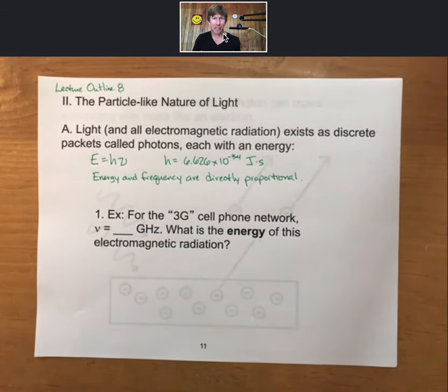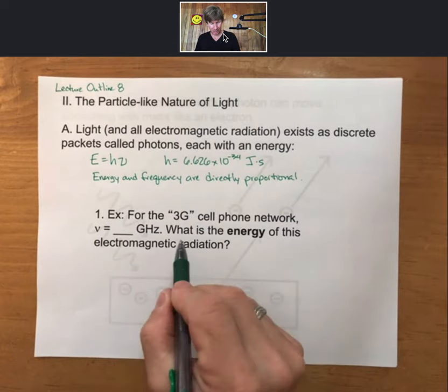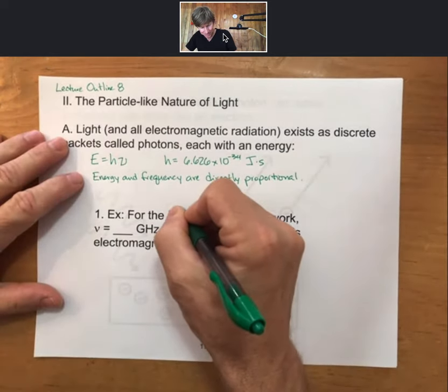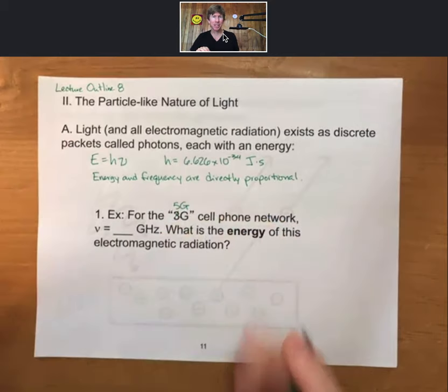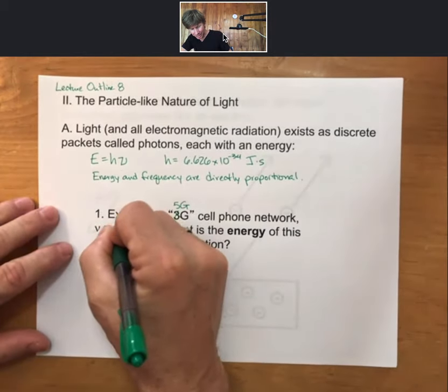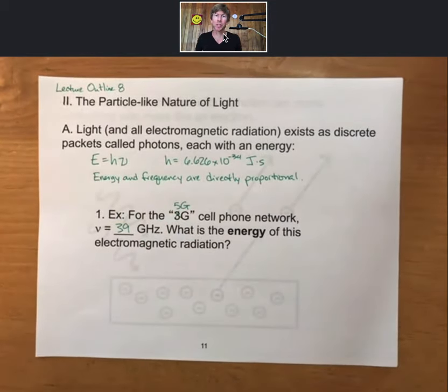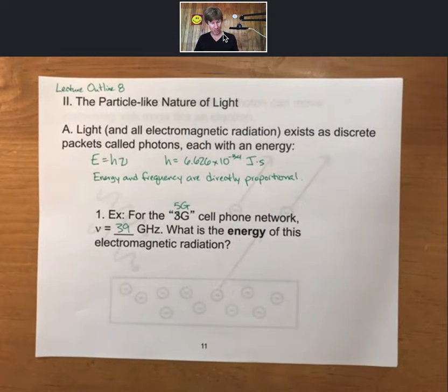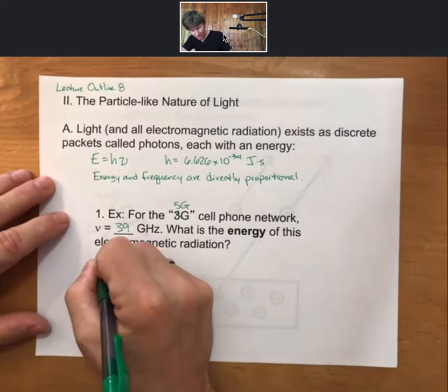As an example of a calculation you could be asked to do on the homework or an exam, this used to be the 3G way back in the day, now it's 5G. For the 5G cell phone network, frequency equals 39 gigahertz. So we'll do it for the same frequency that we did in the previous video. What is the energy of this electromagnetic radiation?